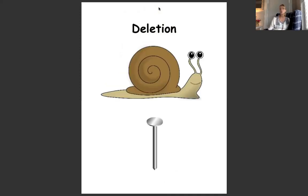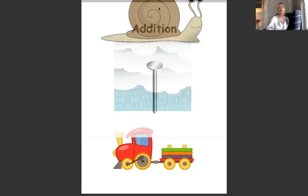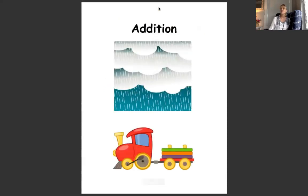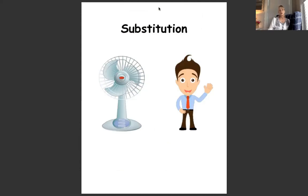The fifth skill is deletion, or the ability to delete a beginning or ending phoneme from a given word — for example, say snail without the /s/. The sixth is addition, or the ability to make a new word by adding a phoneme — for example, add /t/ to the beginning of rain. The seventh skill is substitution, or the ability to make a new word by replacing one phoneme for another — for example, in the word fan, change the /f/ to /m/.